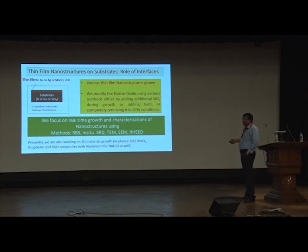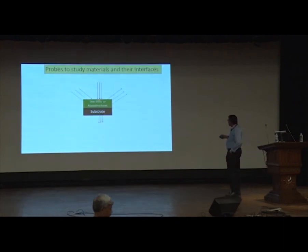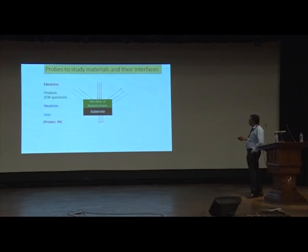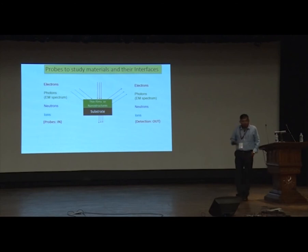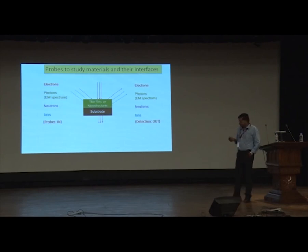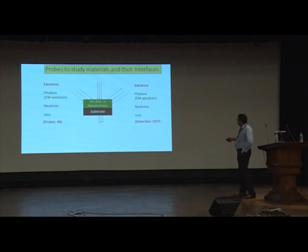We also study real-time structural kinetics — how nanostructures grow and what happens. We have thin films or nanostructures on substrates, and we use various probes: electrons, photons, neutrons, and ions. If you shoot electrons in and detect electrons out, it is electron microscopy. Basically, all scattering phenomena involve a probe in and probe out for detection, used to understand bulk, surfaces, and interfaces.